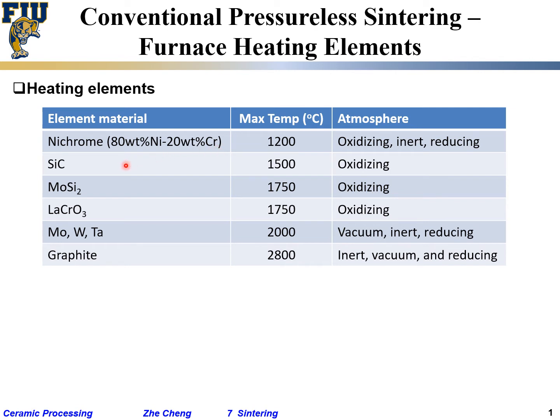Silicon carbide is a type of ceramic. Its melting temperature is actually 2700°C, which is high enough. However, when you have a silicon carbide element, it only works up to around 1500°C maximum temperature.